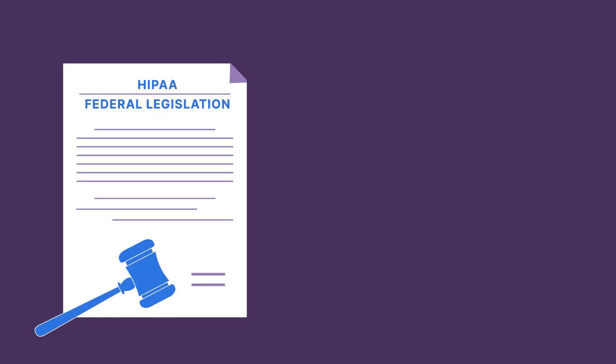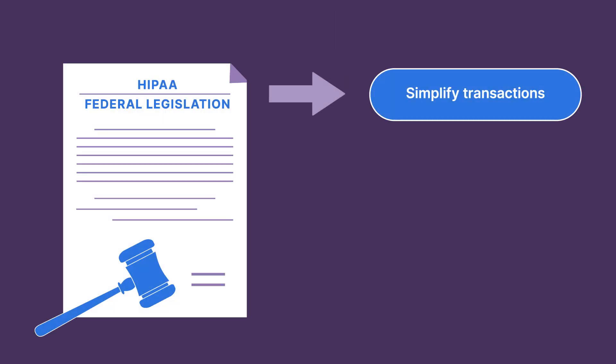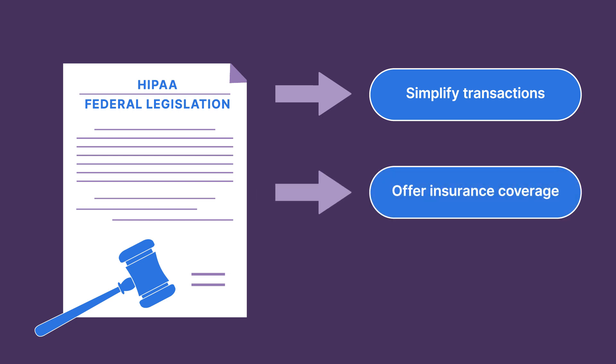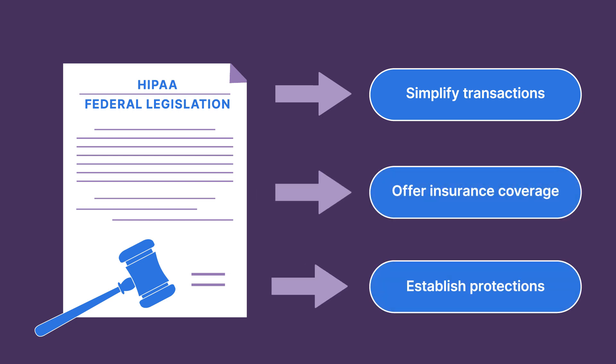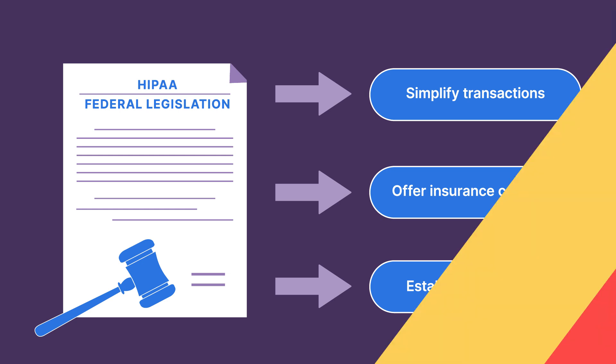HIPAA is federal legislation that aims to simplify health care transactions, offer insurance coverage to workers transitioning between jobs, and, most important for our discussion, it establishes protections for individuals' health information. While there are a number of rules within HIPAA, it is helpful to remember many of them center on maintaining patient privacy and patient control over their medical information.